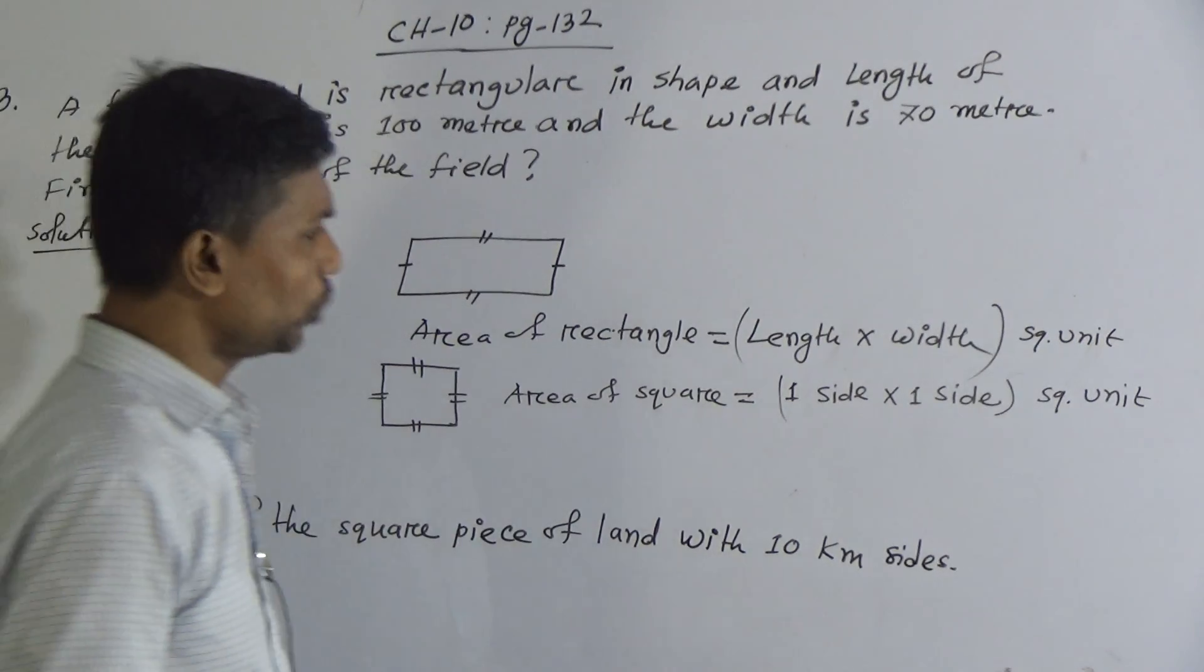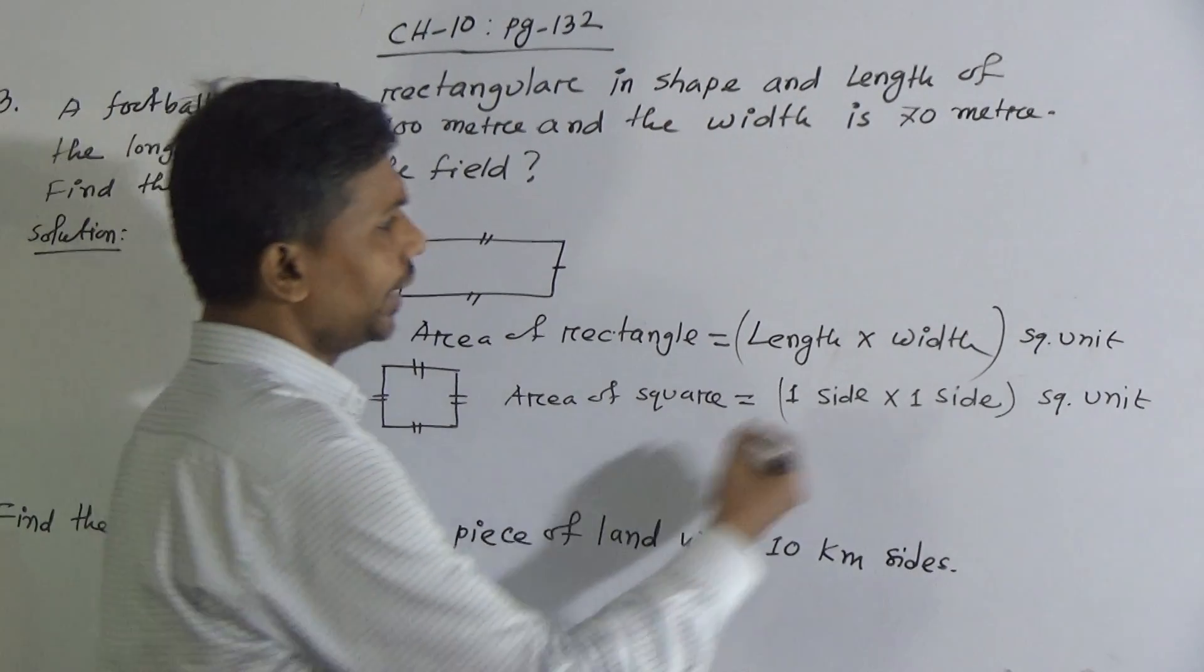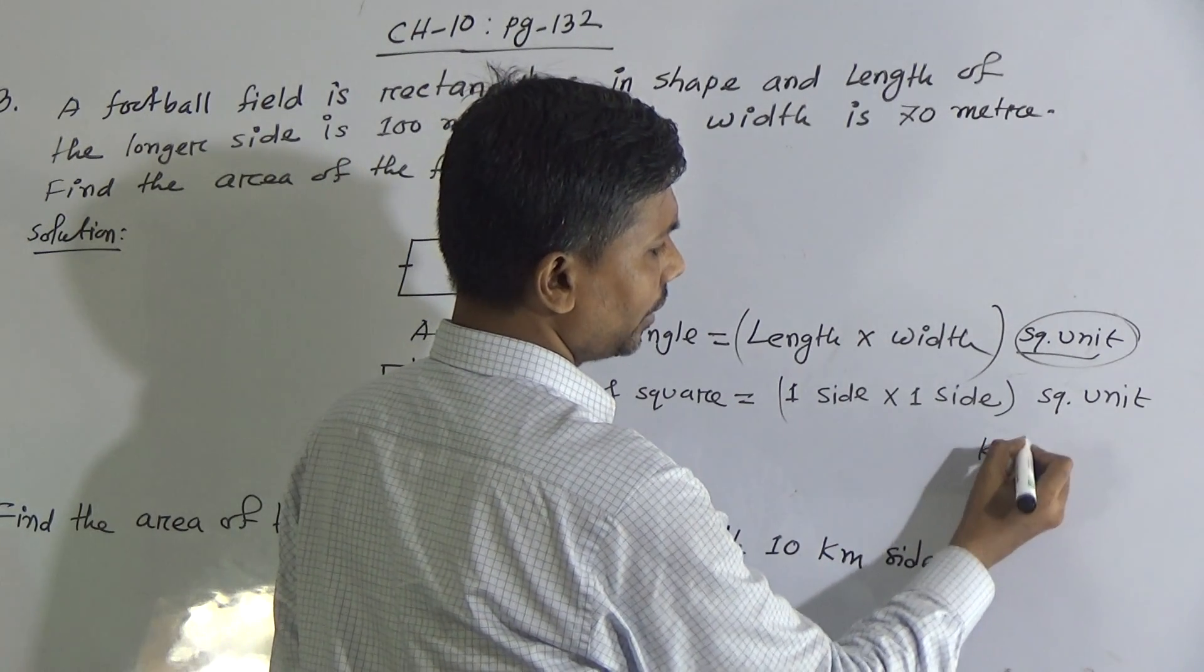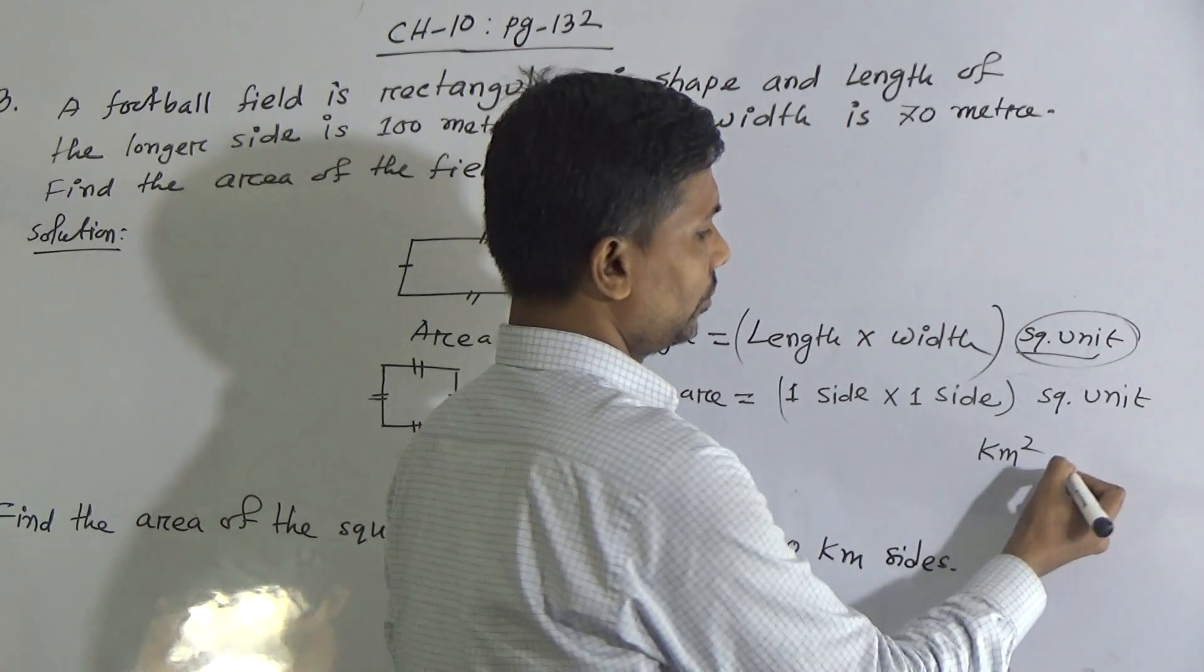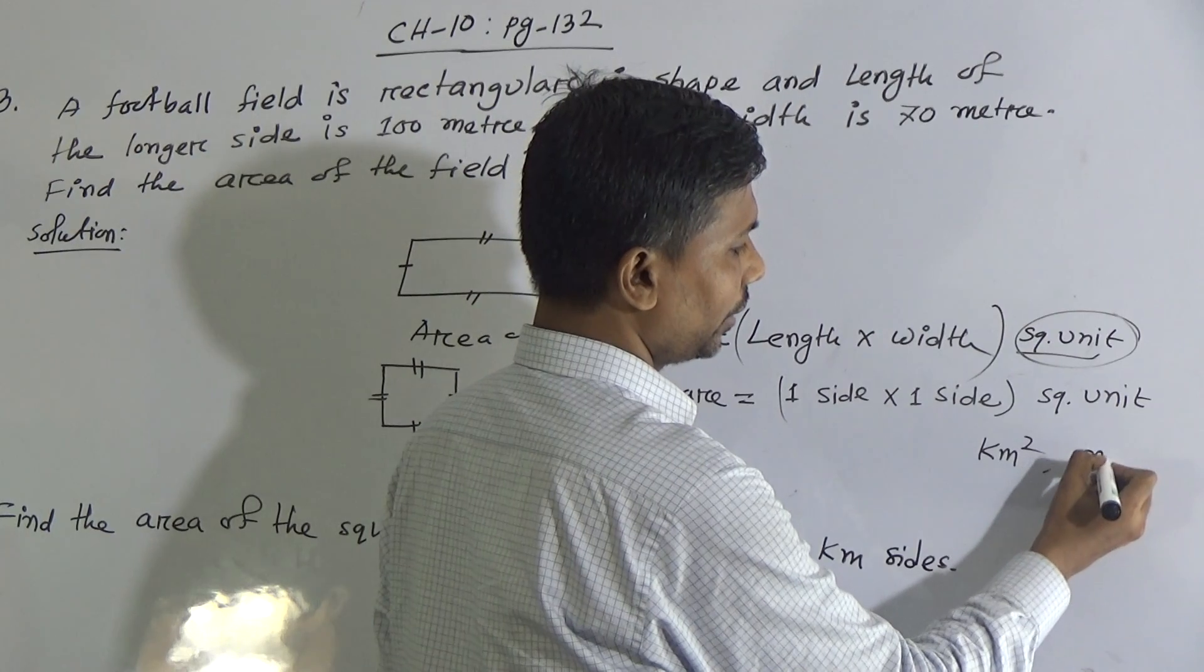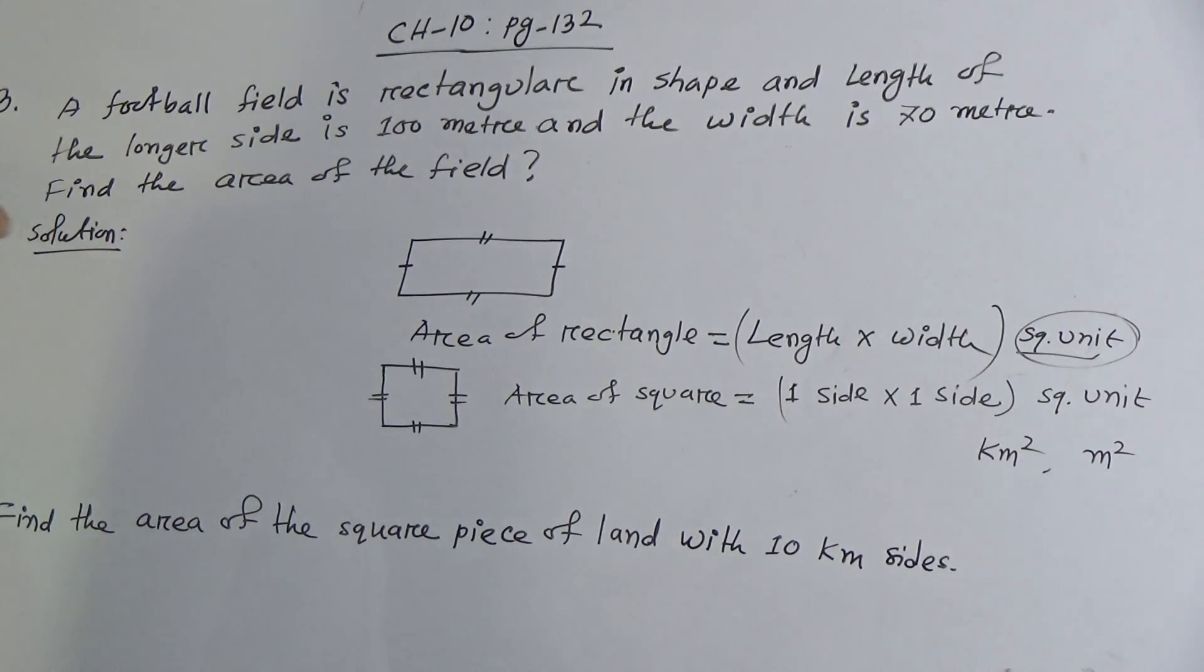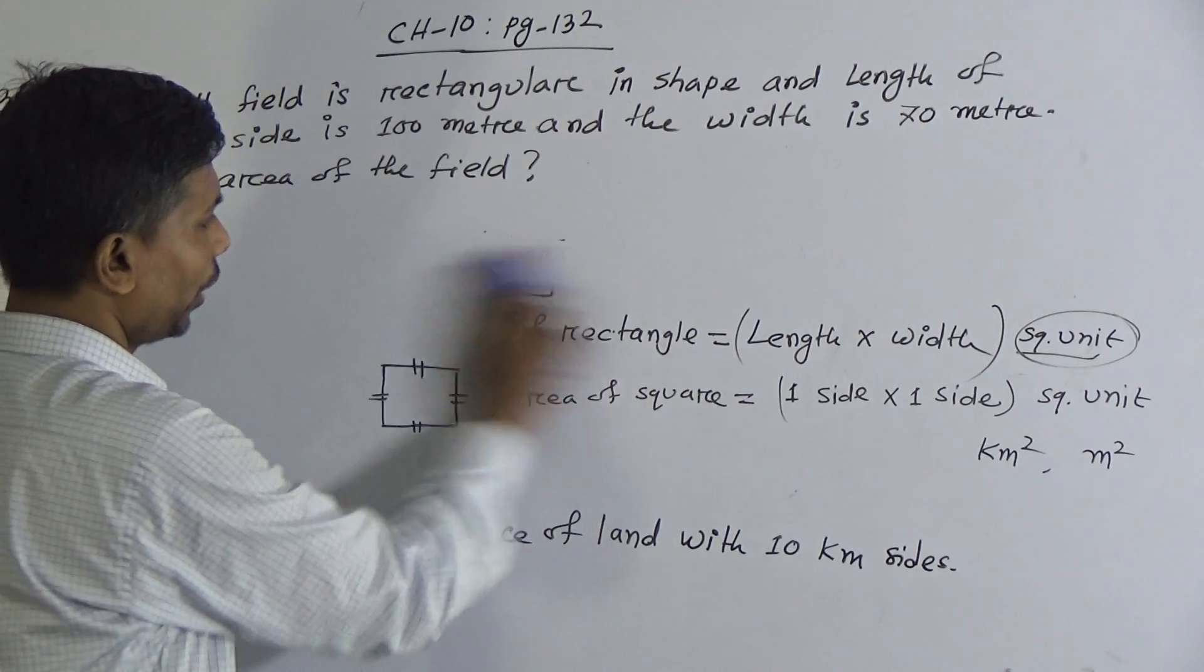Just remember, in your book, page 132, instead of square unit, if they say kilometer, then they write kilometer square, or meter square, or square meter. So, according to the book, we have to follow the rules. I hope you understood.